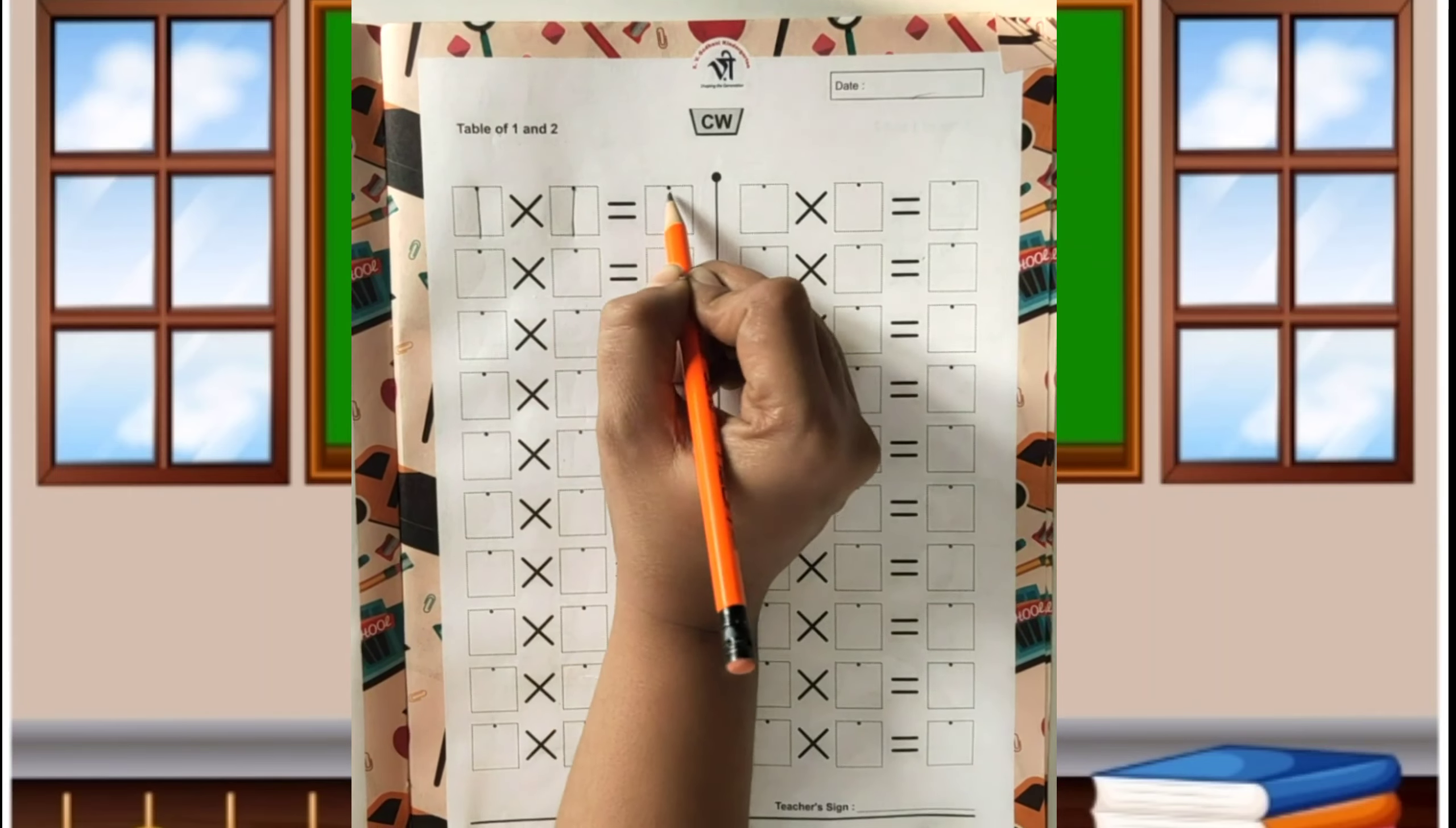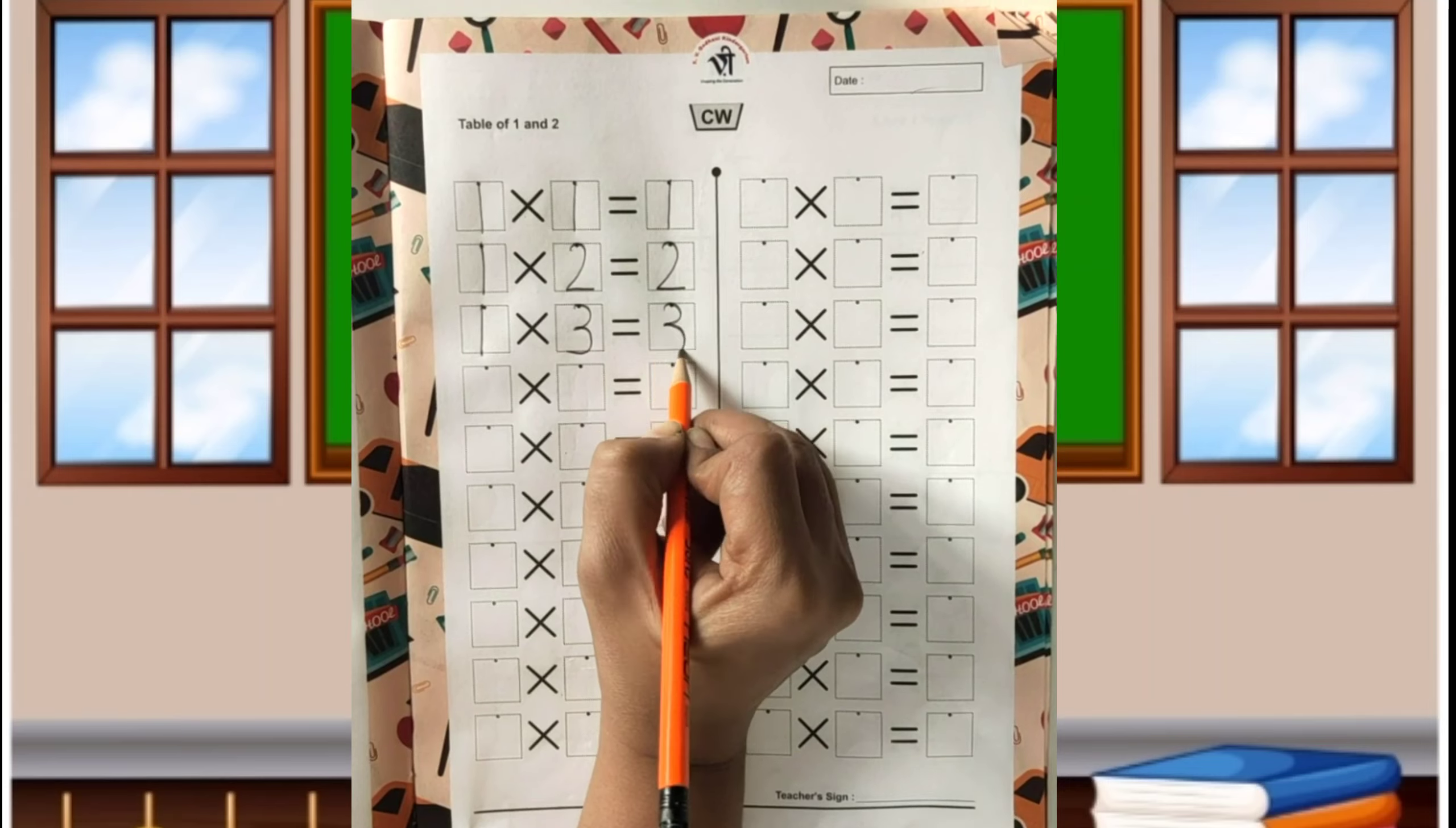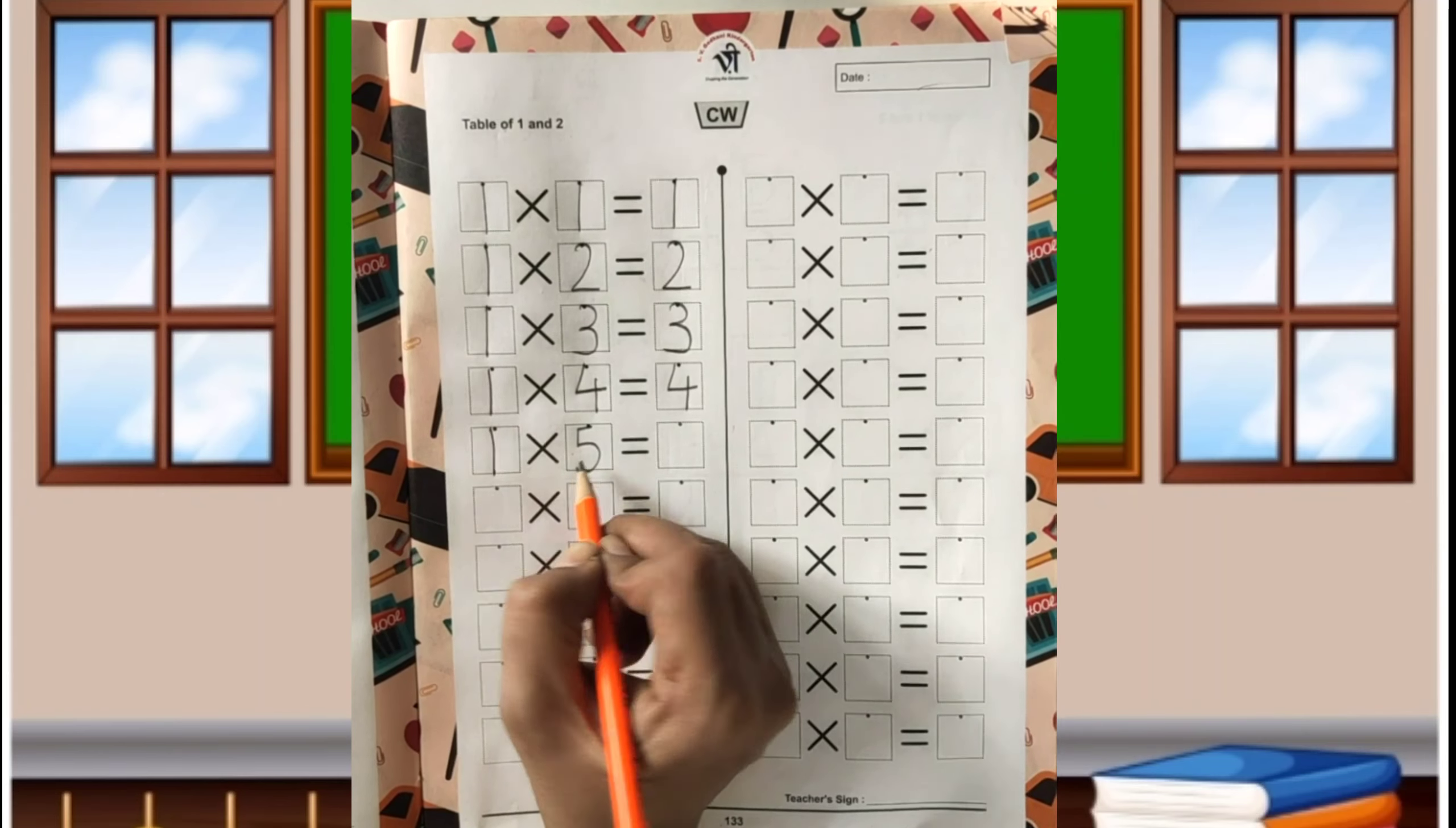One, one's are one. One, two's are two. One, three's are three. One, four's are four. One, five's are five.